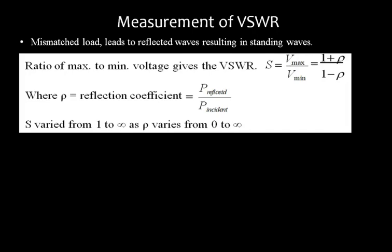Voltage standing wave ratio is the ratio of V maxima to V minima, which can be calculated as one plus the modulus of the reflection coefficient divided by one minus the modulus of the reflection coefficient. The reflection coefficient is reflected power divided by incident power, or in terms of load: ZL minus Z0 divided by ZL plus Z0. Both formulas are equivalent. VSWR varies from one to infinity, whereas the reflection coefficient varies from zero to one.